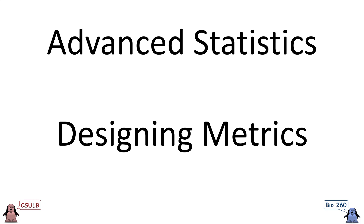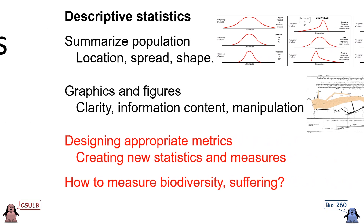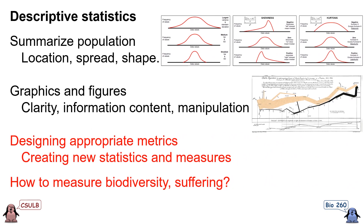This video is the first of our advanced statistics topics, and it's designing metrics. When we talked about descriptive statistics, we talked about summarizing populations or samples of data with location, spread, and shape. We moved on to looking at graphics and figures, thinking about how they can exhibit clarity, information content, and how they can be used to manipulate. A third topic is designing appropriate metrics - creating new statistics and measurements for things we would like to do statistics with.